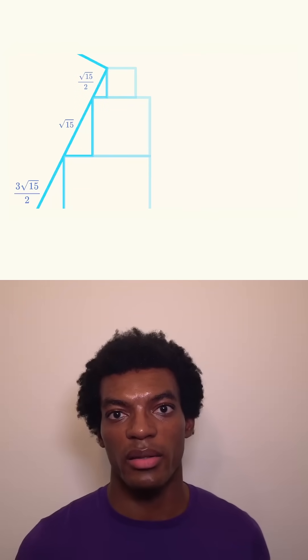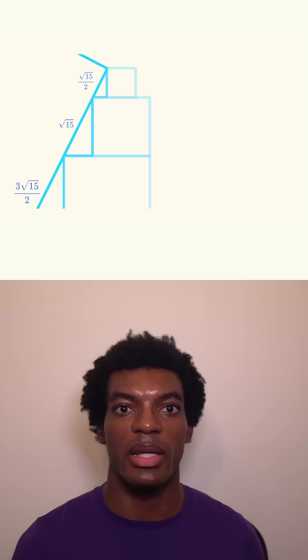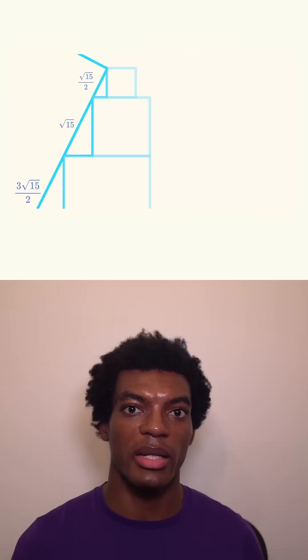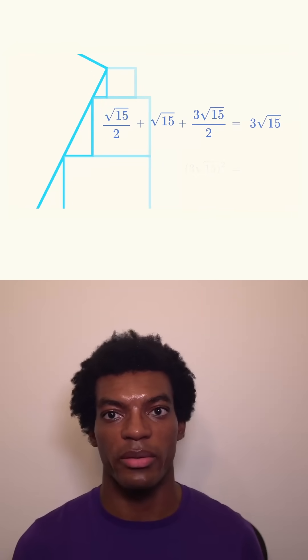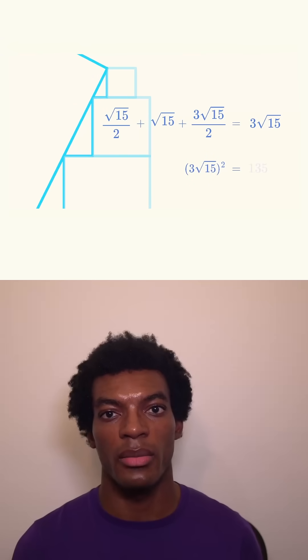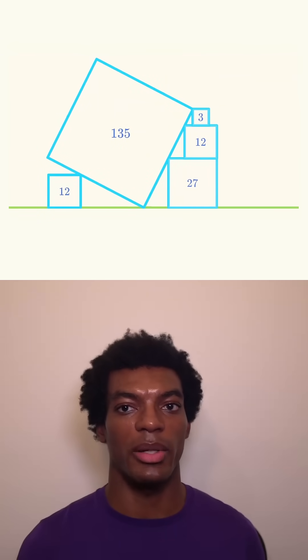The side length of the toppled square is equal to the sum of the lengths of the three hypotenuses, or 3 times the square root of 15. We can square that number to get its area, which turns out to be 135.